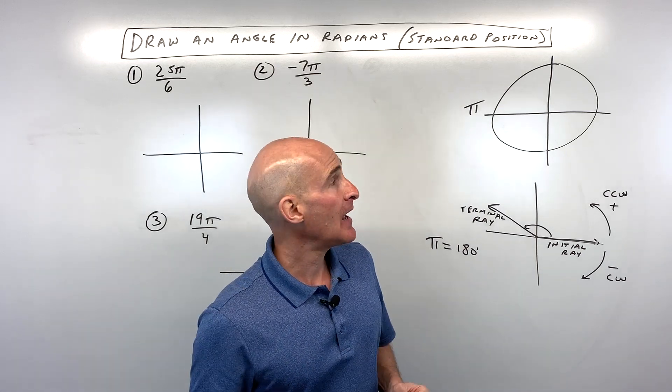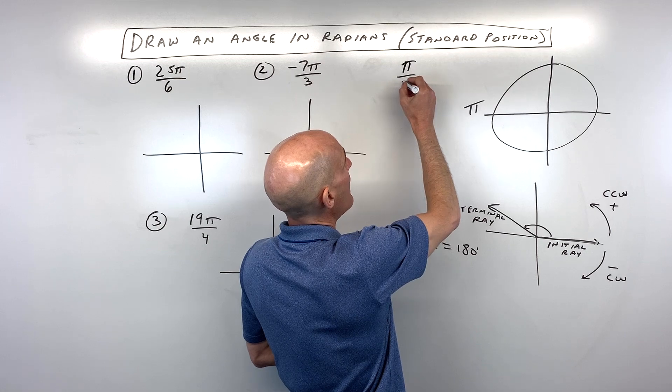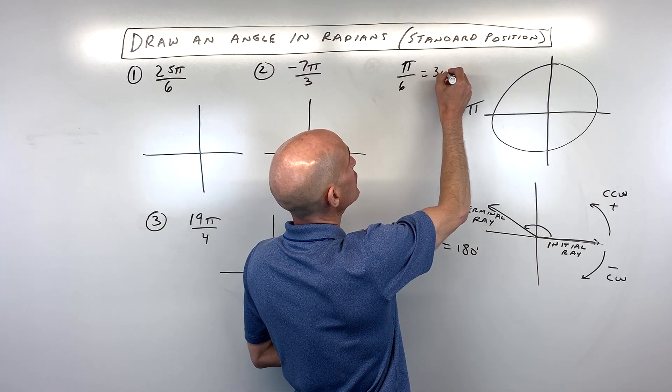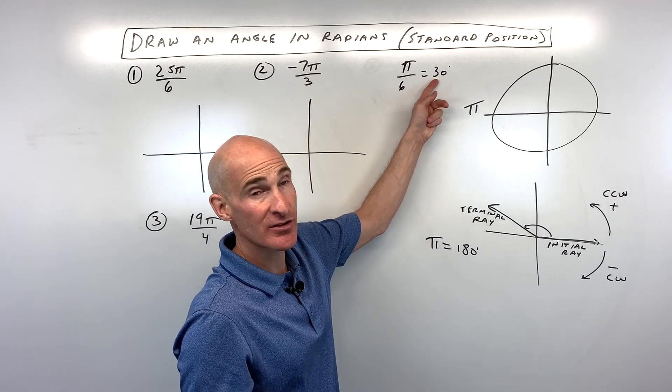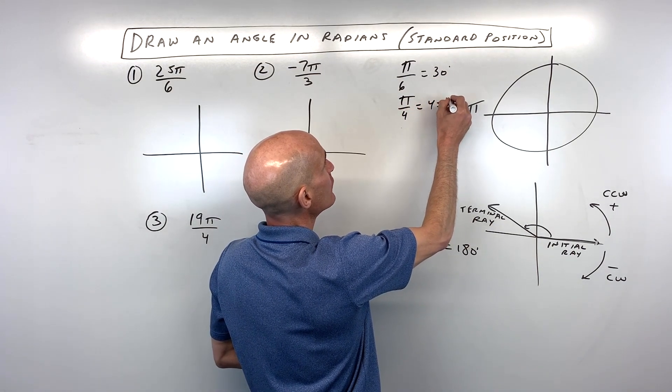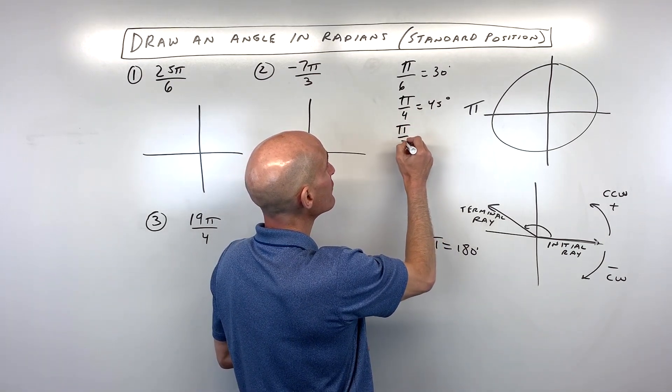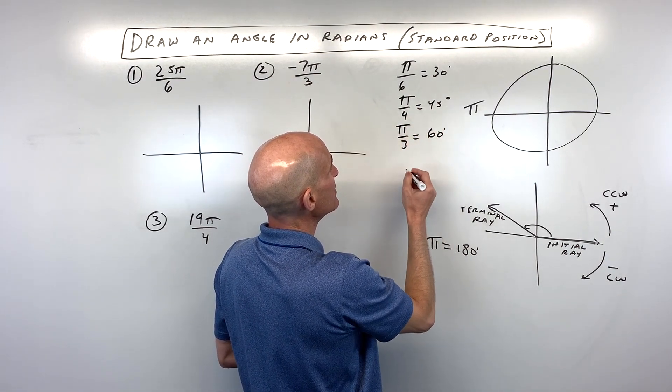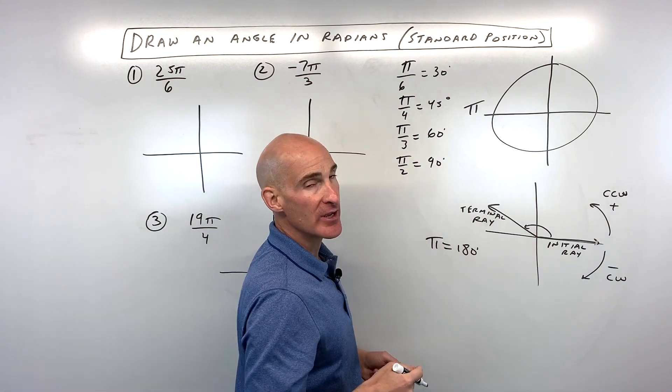Some angles in radians that are good to remember that come up a lot are like pi over 6. That's equal to 30 degrees. Because remember, pi is 180. 180 divided by 6 is 30. Another one that's good to remember is pi over 4. That's 45 degrees. Again, 180 divided by 4. Pi over 3, that's 60 degrees. That's 180 divided by 3. Pi over 2, that's 90 degrees.